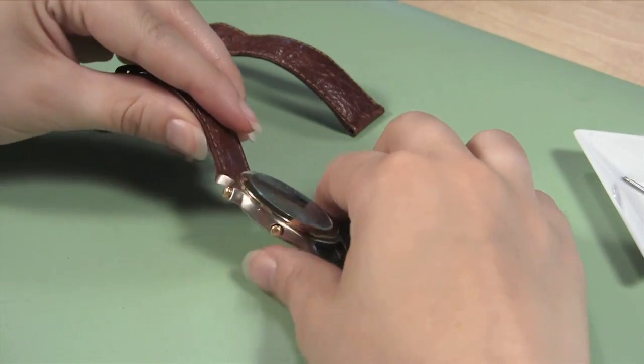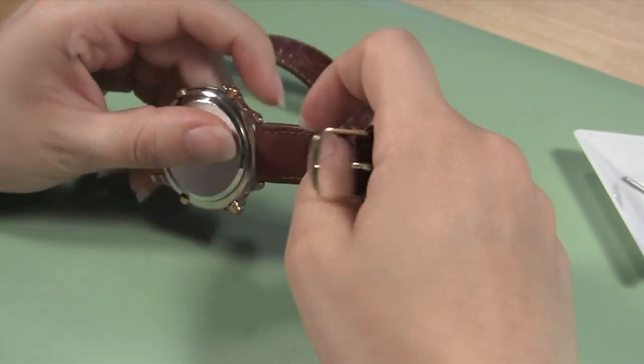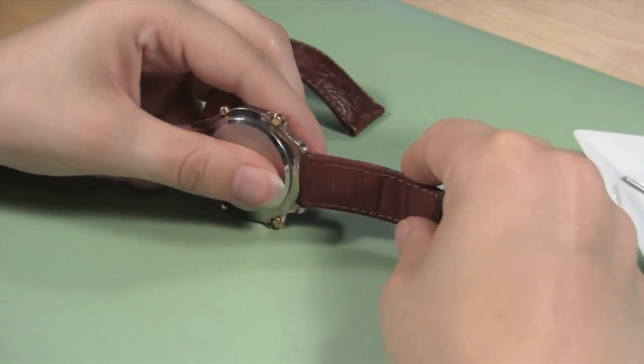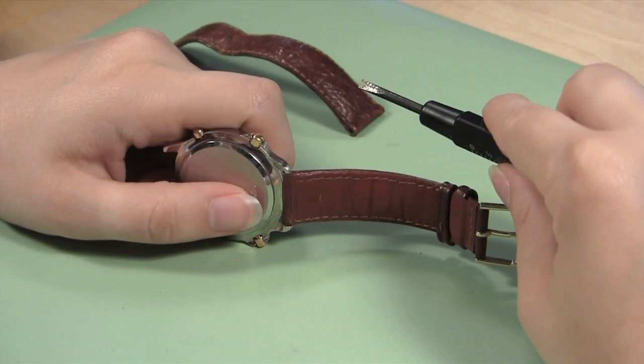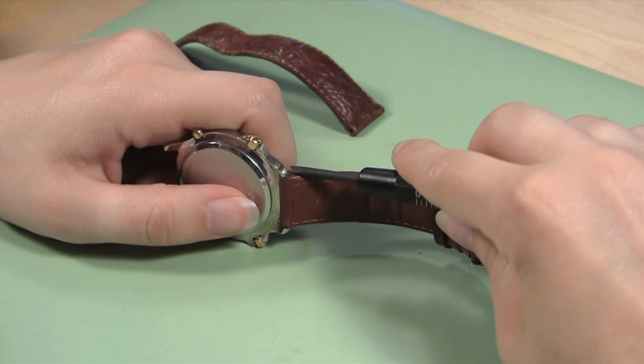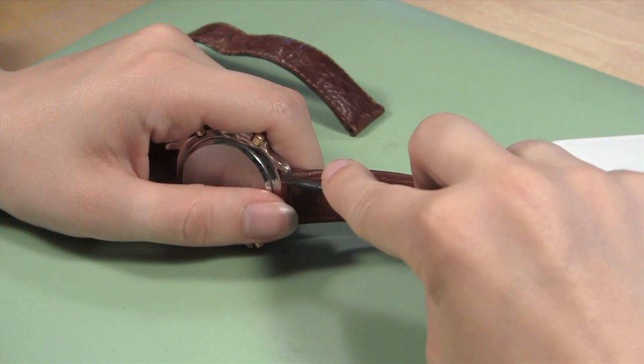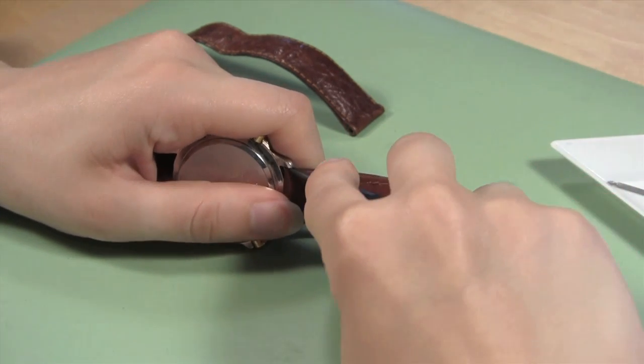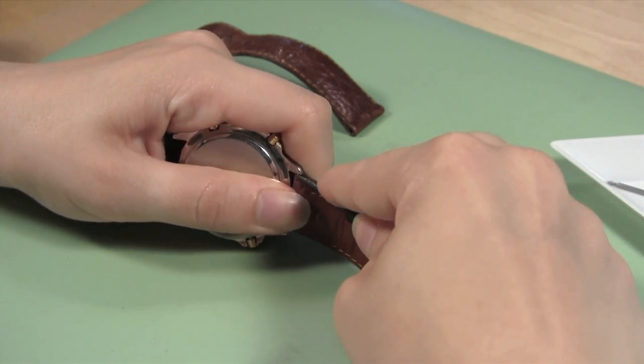Turn the watch case so that the half of the watch band that is still attached to the watch case is accessible to your tools. Take your spring bar tool and repeat what you did before. Move the forked end in under the case lug and then push down and to the side to slide the spring bar free of the watch case.